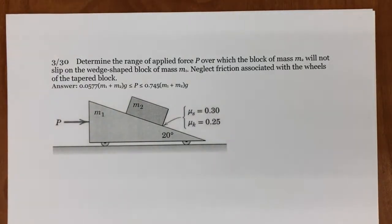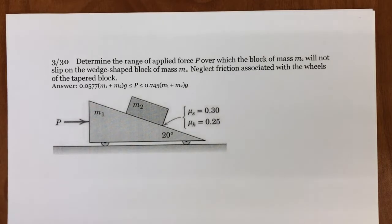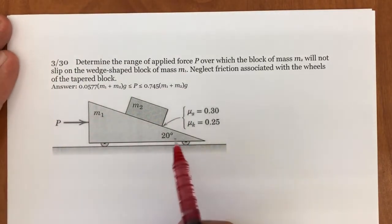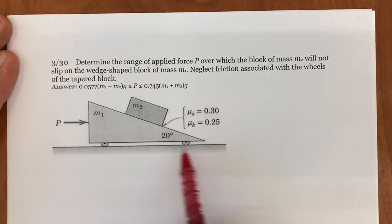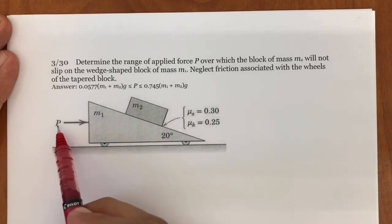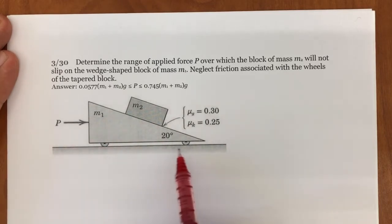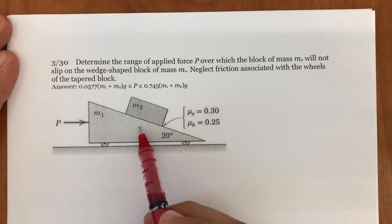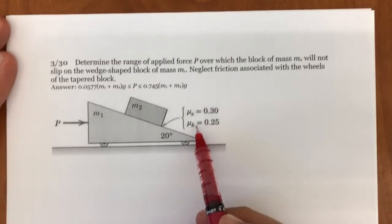Our next example is problem 30, chapter 3. This one requires a little bit of work, so I would recommend working on this at least for 20 minutes before seeing the rest of the video. In this problem, we have a block sitting on top of another mass. We are applying force P to it. There is no friction between this block and the ground, but there is friction between the two masses, and the friction coefficients are given.